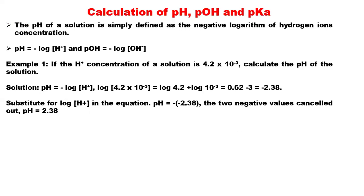Let's look at the calculation of pH and pKa. The pH of a solution is simply defined as the negative logarithm of hydrogen ion concentration, so the formula is: pH = −log[H⁺]. Similarly, pOH is the negative log of OH⁻ concentration, so pOH = −log[OH⁻].